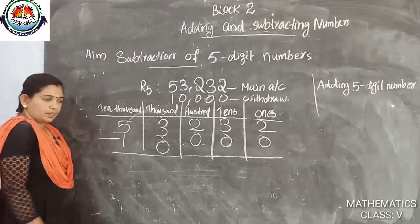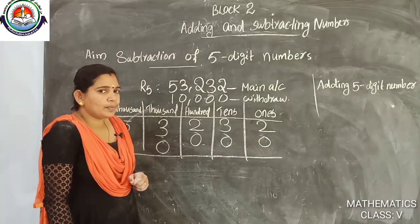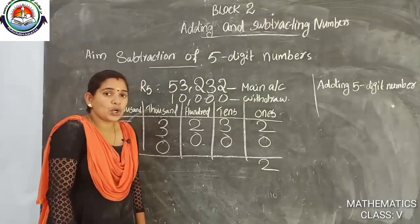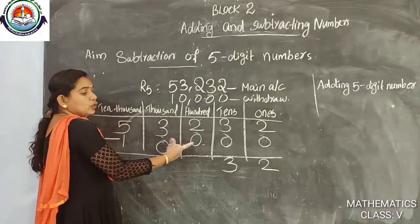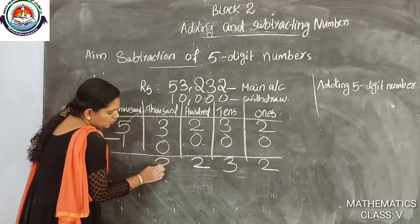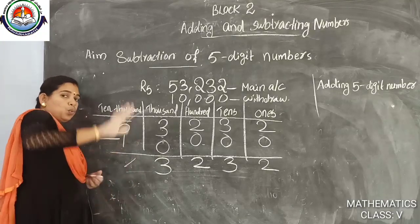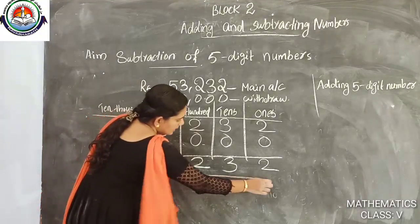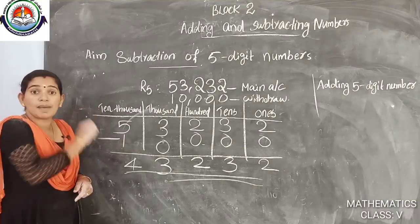Then we subtract. 2 minus 0 is 2. 3 minus 0 is 3. 2 minus 0 is 2. 3 minus 0 is 3. 5 minus 1 is 4. So the answer is 43,232 — the same answer we got using the abacus.